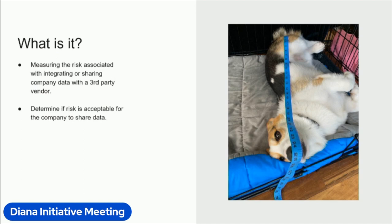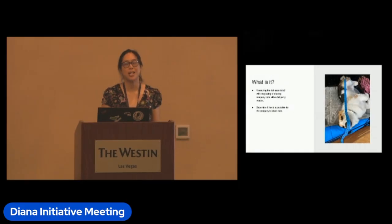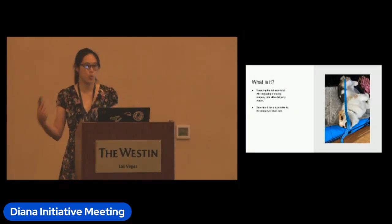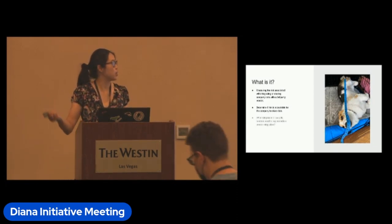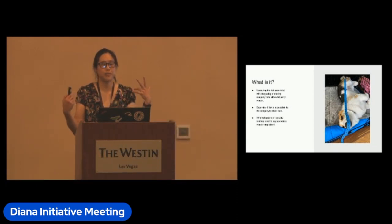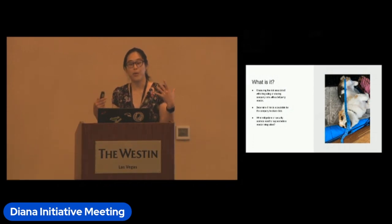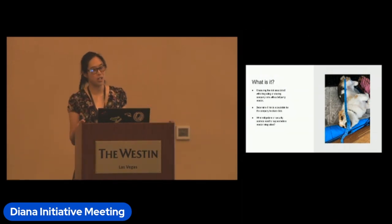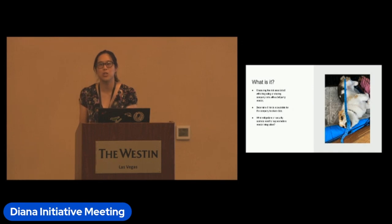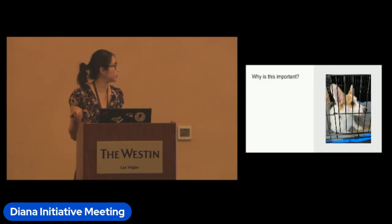For the risk, maybe installing a sketchy dog emoji counting Slack app might not be worth the risk, but installing Slack itself is worth the risk. You also have to consider what mitigations or security controls need to happen before vendor integration. Essentially, you're trying to answer the question of what do we need to do to enable the teams to use this vendor with as little risk to your organization as possible.